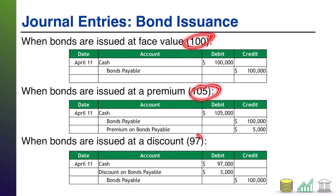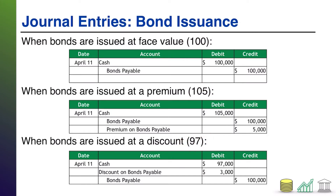Remember, these market quotes could be anything — they could be 100, 101, 102, 110, 120, or they could be 97, 95, 94, 80. They can be anything. They're just percentages of face value received.